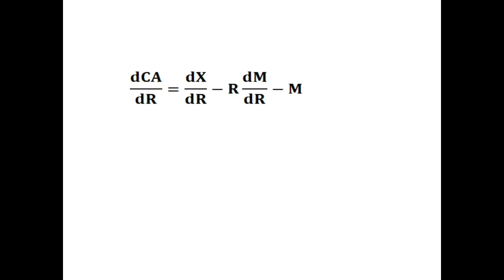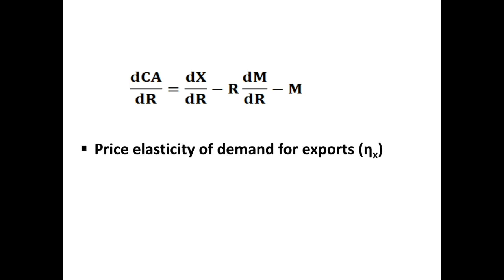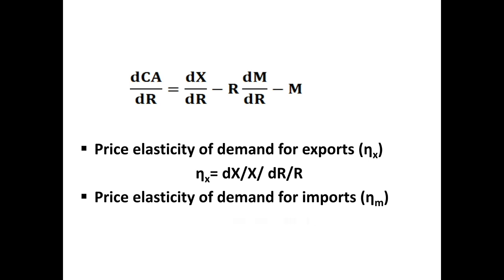At this point we introduce two definitions of elasticity: the price elasticity of demand for exports and the price elasticity of demand for imports. For exports, the price elasticity of demand ETA_X is defined as (dX/X) divided by (dR/R) — that is, the percentage change in quantity exported divided by the percentage change in the nominal exchange rate. We are only dealing with changes in the exchange rate because, per assumption, prices are fixed. So this model only examines what happens to the current account when there is a change in the exchange rate in the form of devaluation.